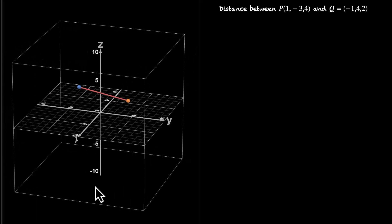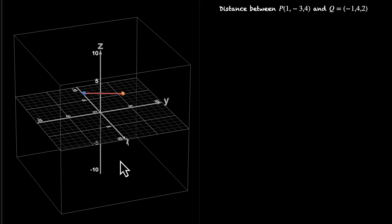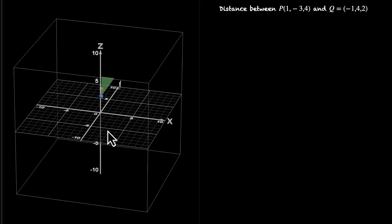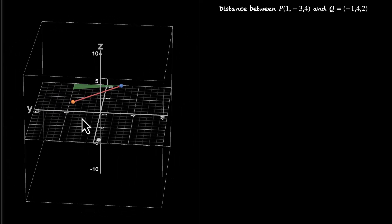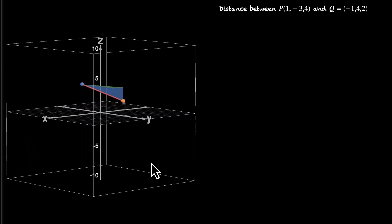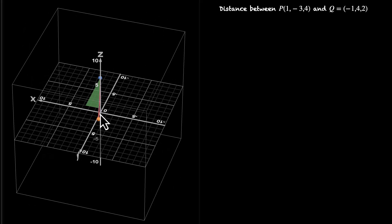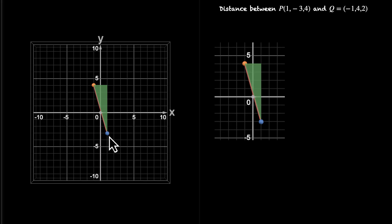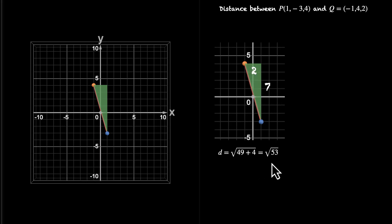How do we figure this length out? Pause the video and try visualizing. If we see this from above, we can form a right angle triangle. Using this first triangle, we can go from blue to an intermediate point, but we still haven't reached the yellow point, so we need one more right angle triangle. Now both triangles are complete, and we'll use the Pythagorean theorem twice. For the first triangle, moving from y-coordinate -3 to 4 gives a length of 7, and the difference in X coordinates (1 to -1) gives 2. Applying Pythagoras: 49 + 4 = 53, so the hypotenuse is √53.